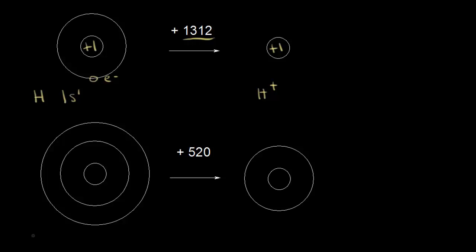Now let's look at lithium. Lithium has atomic number three, so three protons in the nucleus, and in a neutral atom, three electrons. The electron configuration is 1s2, 2s1 — two electrons in the first energy level in an s orbital, and one more electron in the second energy level. If we were to take an electron away, the one most likely to leave would be the outermost electron in the 2s orbital.